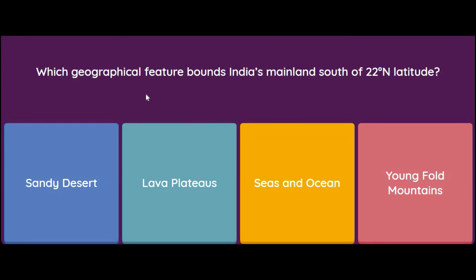Which geographical feature bounds India's mainland south of 22° North latitude? Options: sandy deserts, lava plateaus, seas and oceans, or young fold mountains. South of 22°N, India's mainland is bounded by seas and oceans. So the correct answer is seas and oceans.